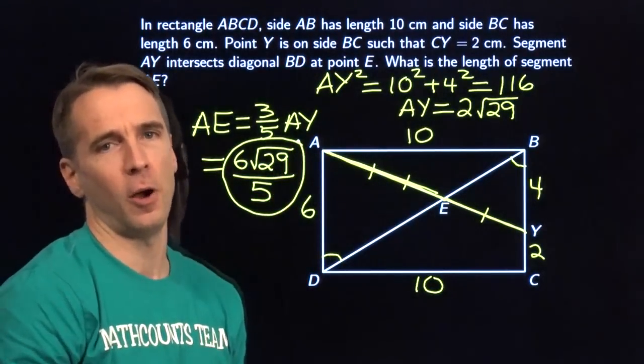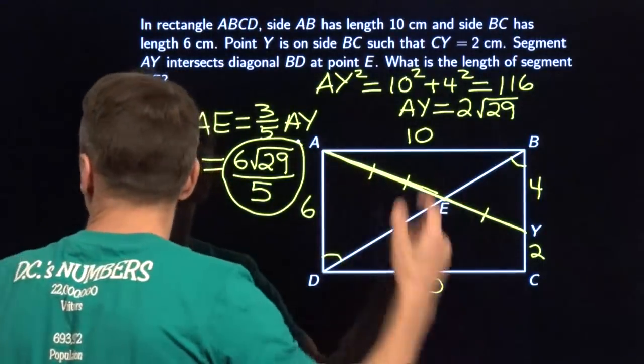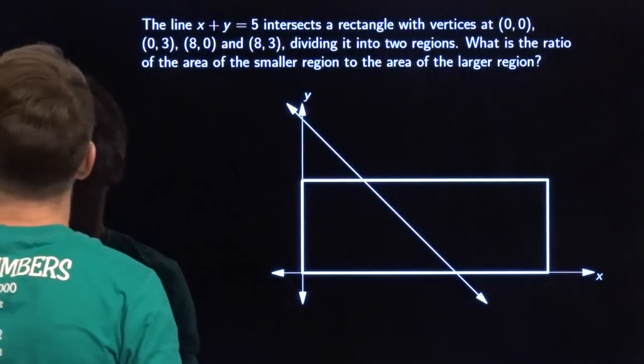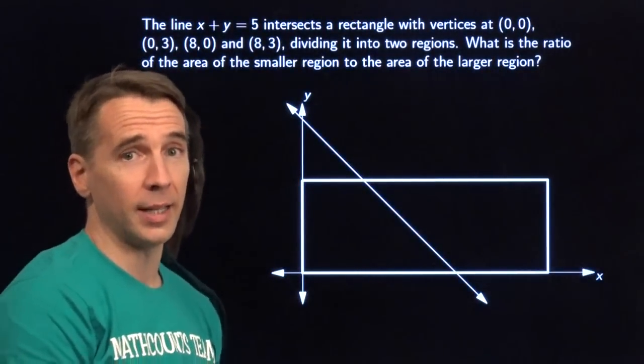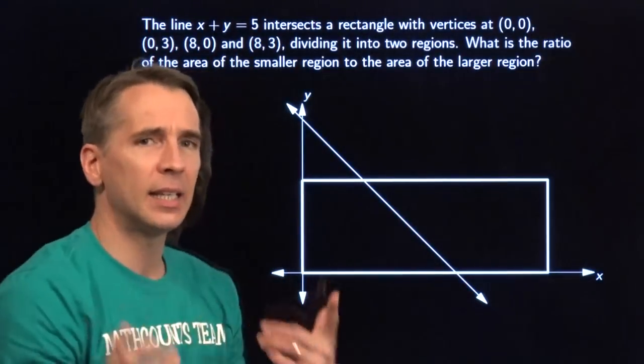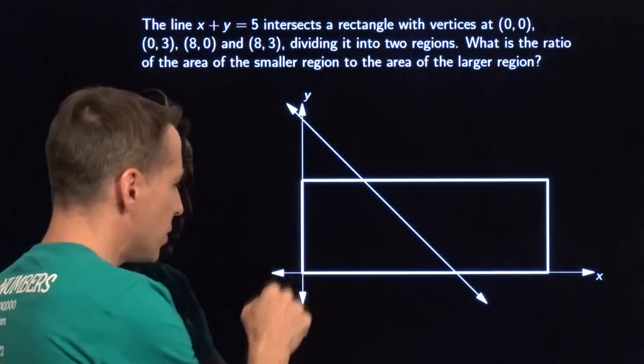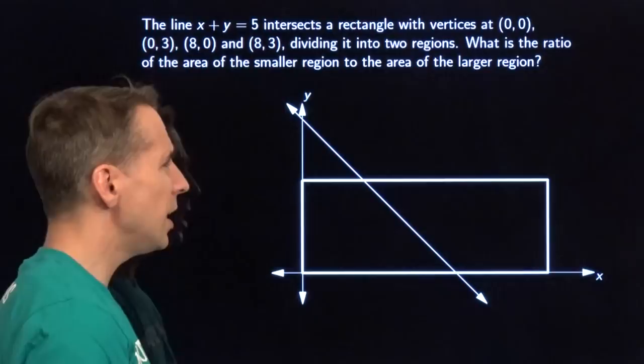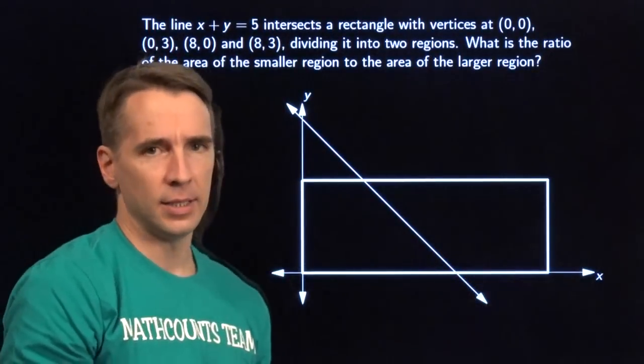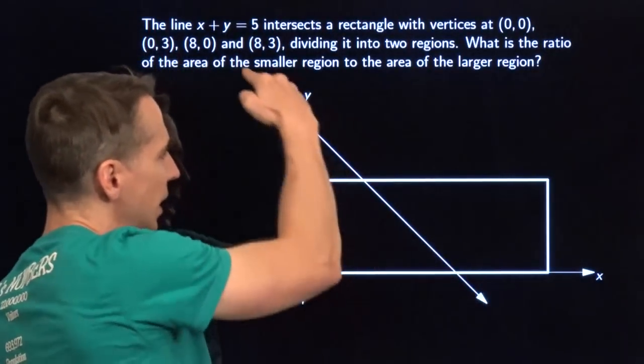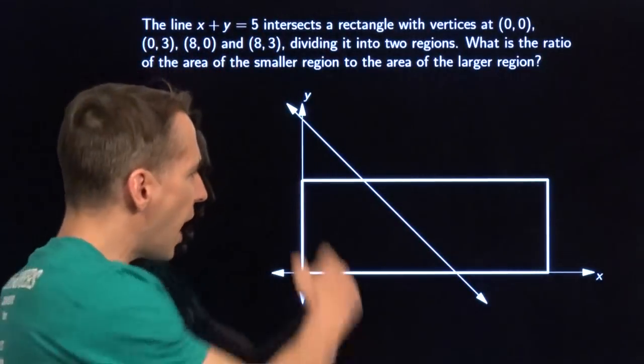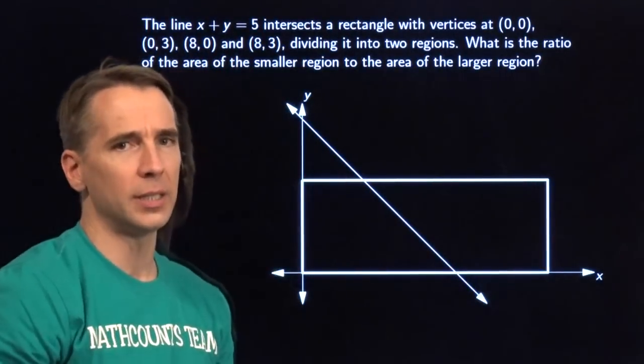Just like that. No help from Harv. Yeah, we'll go on to the next problem. All right. Got another rectangle here. We have a rectangle and it gives us the vertices of this rectangle. We have (0,0), (0,3), (8,3), and (8,0). And in this line right here, that's the graph of X plus Y equals 5.